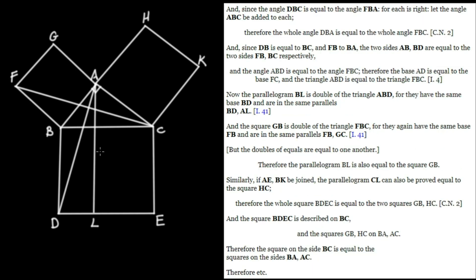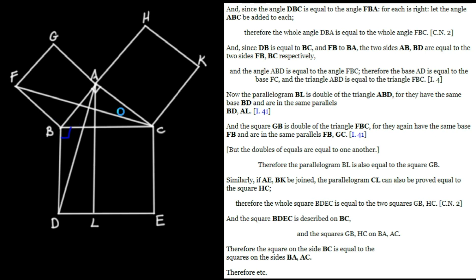Now the next step is to demonstrate that triangle FBC is equal to triangle DBA. Since the angle DBC and the angle FBA are both right angles, let the angle ABC be added to each. Equals added to equals will generate equals. Therefore, the whole angle DBA is equal to the whole angle FBC — those two angles are equal.